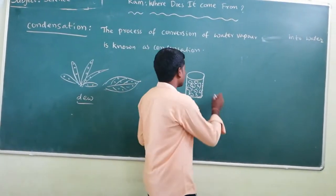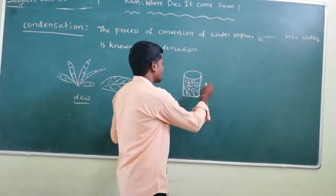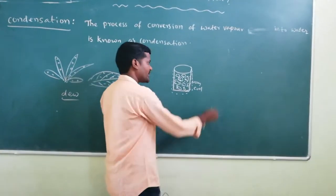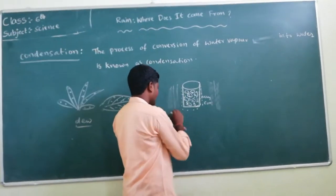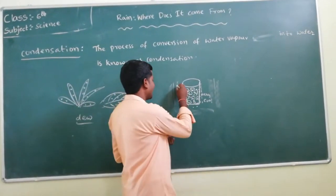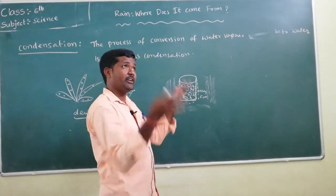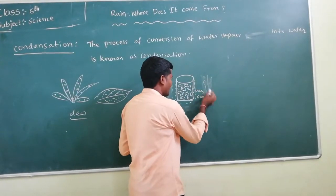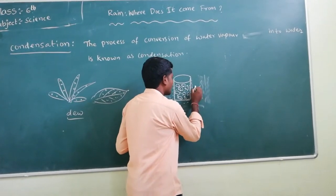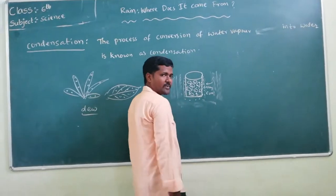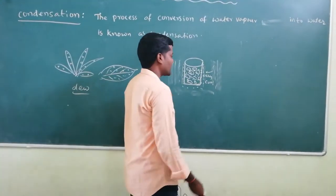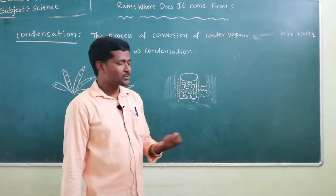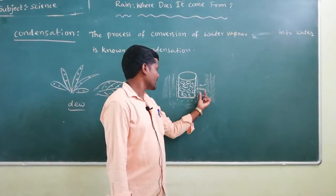Our surrounding air has some amount of water vapor. This water-vapor-containing air comes into contact with the very cool surface area of the ice-cube-containing glass. What happens here? The water vapor converts into small size, tiny droplets of water. This process is called condensation. The environment process here is condensation.